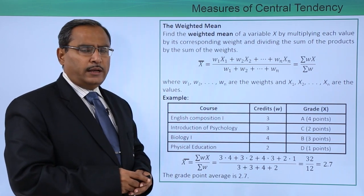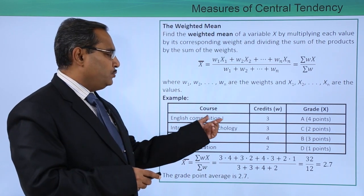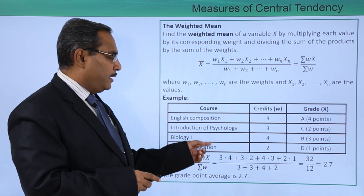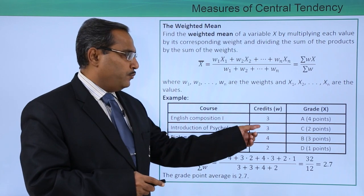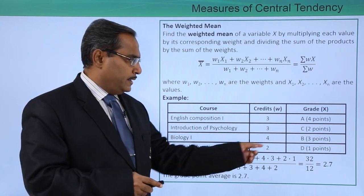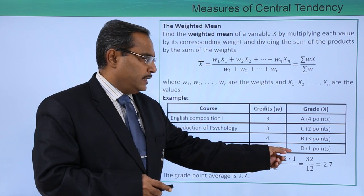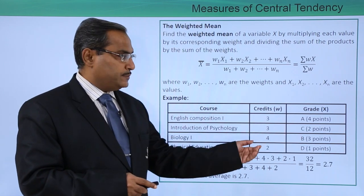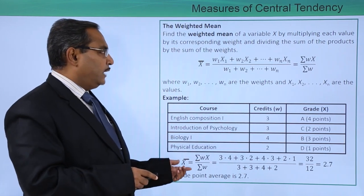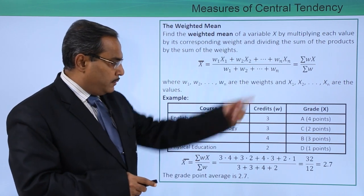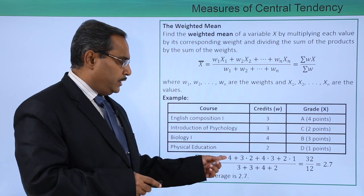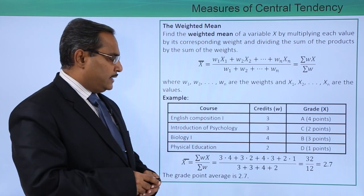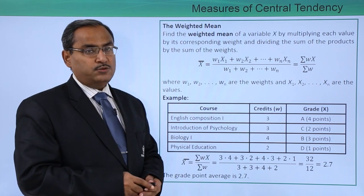Now let us go for one example. We have four different courses: English Composition 1, Introduction to Psychology, Biology 1, and Physical Education, with respective credits as weightages and grades A, C, B, and D. We have written the respective points for which each grade was obtained by the student. To calculate the weighted mean, we apply the formula: (3×4 + 3×2 + ...) divided by the sum of the weightages, and we get the average as 2.7. The grade point average is 2.7.